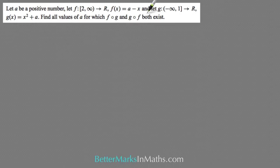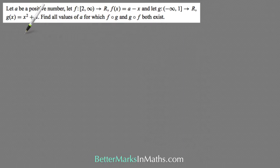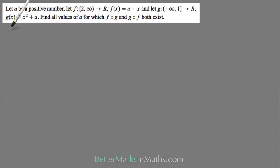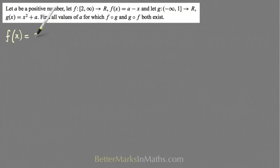The key phrase here is 'both exist' — that automatically tells you that you need to check the range of the second function is in the domain of the first, and similarly for the other. That's the key bit of information which tells you where to start. The way to set up each problem is first to establish each function with its domain and range.